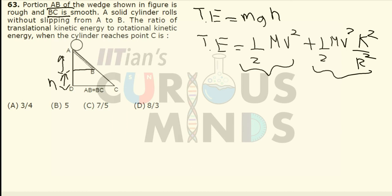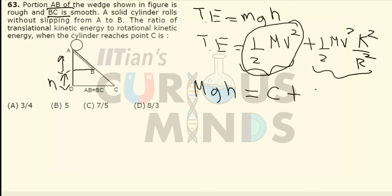The total energy mgh is basically divided into two parts. Let half mv² equal a constant c, so the total energy is c plus c times k²/r². Since it is a solid cylinder, k equals r divided by root 2, so k²/r² equals 1/2.